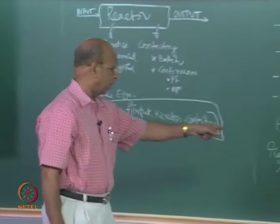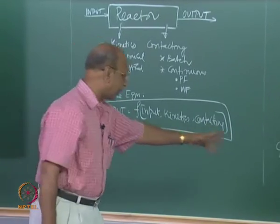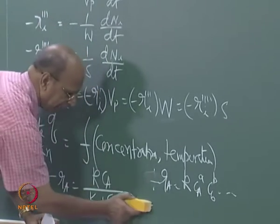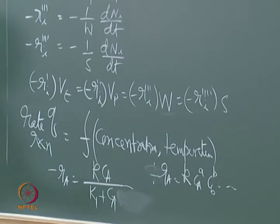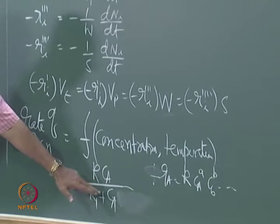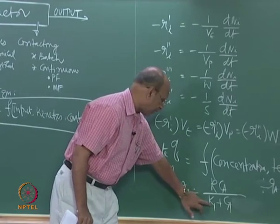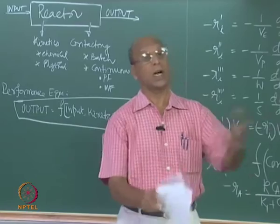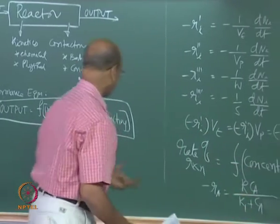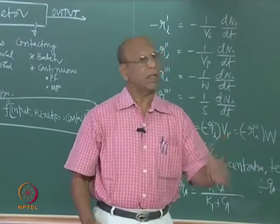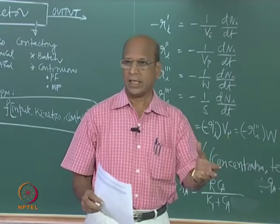Order of reaction can only be stated for limited cases — empirical order like CA to the power 1.2 or 1.5 is only possible if rate is concentration raised to some power. For example, the Michaelis-Menten equation: at very high concentrations, if the constant K is small, it becomes zero order; when the constant is very large and concentration is small, it becomes first order. Whatever reaction rate you have, you must introduce it into the reactor design expression and integrate — sometimes analytically, sometimes graphically or numerically — to calculate volume if conversion is known, or conversion if volume is known.